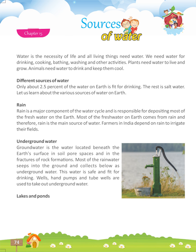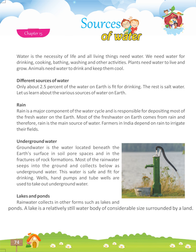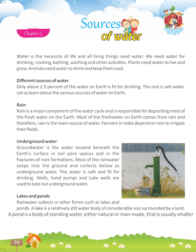Lakes and Ponds. Rain water collects in other forms such as lakes and ponds. A lake is a relatively still water body of considerable size surrounded by land. A pond is a body of standing water, either natural or man-made, that is usually smaller than a lake.